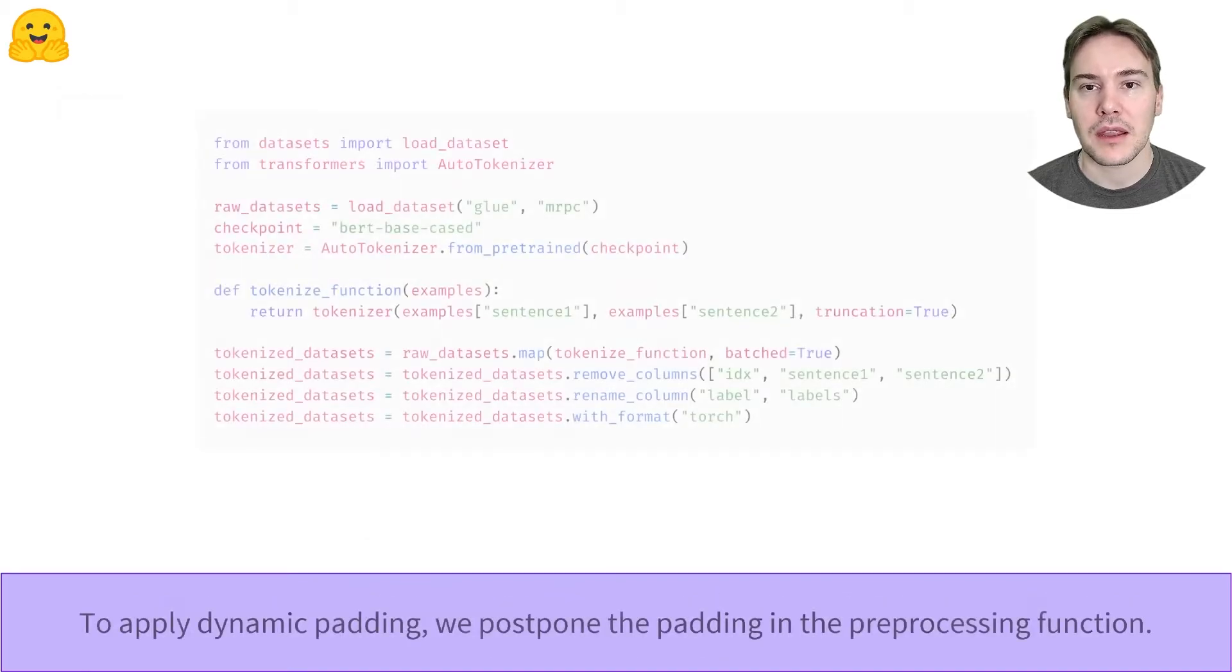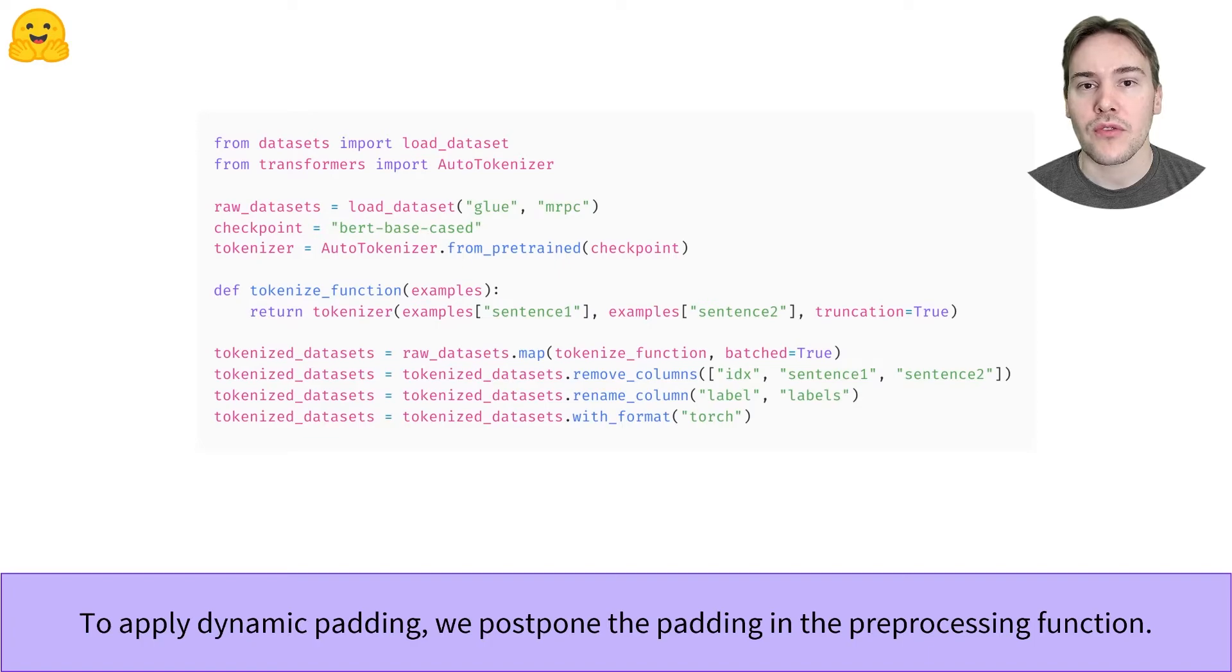To apply dynamic padding, we must defer the padding to the batch preparation. So we remove that part from our tokenize function. We still leave the truncation part so that inputs that are bigger than the maximum length accepted by the model, usually 512, get truncated to that length.